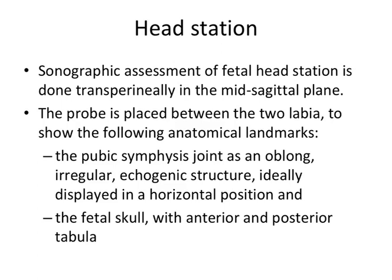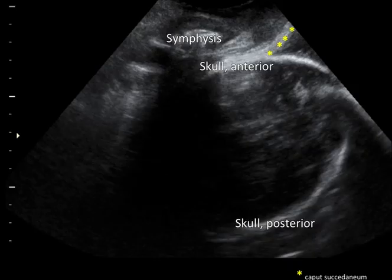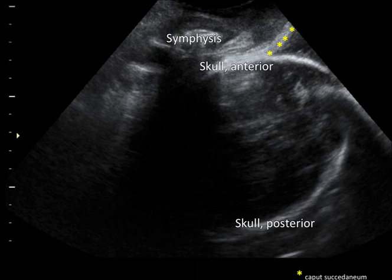Sonographic assessment of fetal head station is done transperineally in the mid-sagittal plane. The probe is placed between the two labia and the following anatomical landmarks are displayed: the pubic symphysis as an oblong structure, ideally displayed horizontally on the screen, and the fetal skull with the anterior and posterior tabula. This image shows a transperineal mid-sagittal insonation with the pubic bone on the top. The anterior and posterior skull are clearly seen. Note the yellow indicators show the caput succedaneum, not the skull.